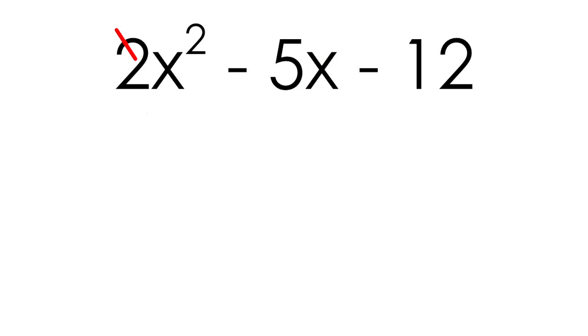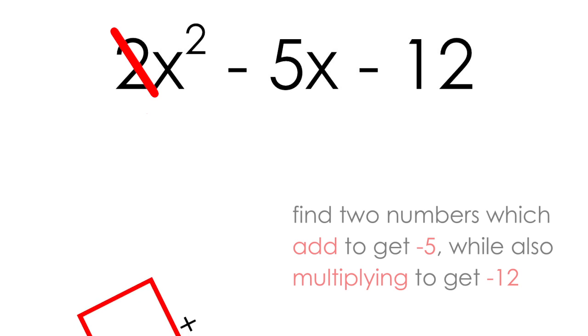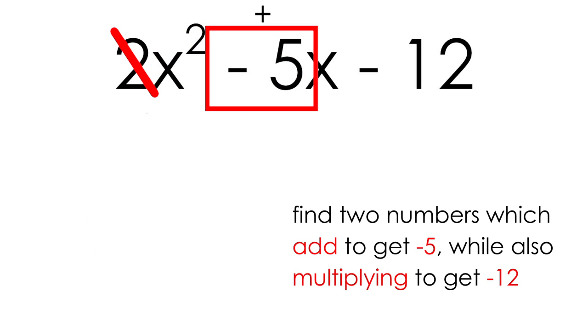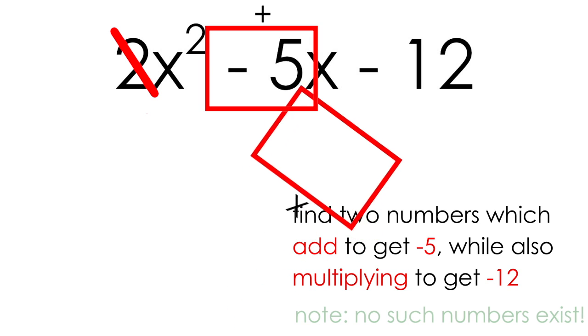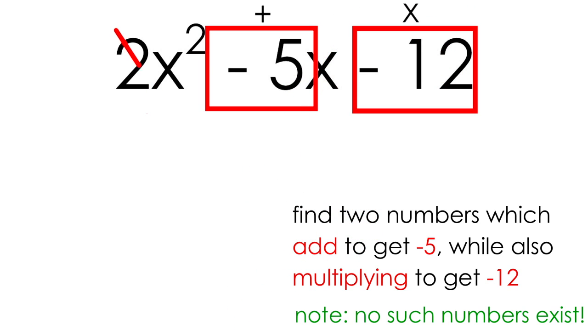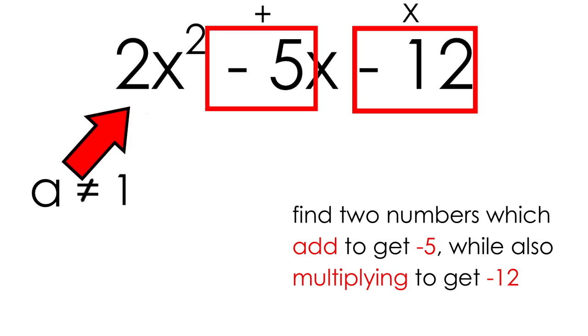If the a value of this trinomial were 1, making this a simple trinomial, we could factor it by finding two numbers which add to get negative 5, while also multiplying to get negative 12. However, since our a value is not 1, the simple trinomial factoring method fails.